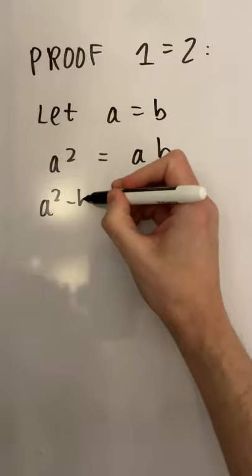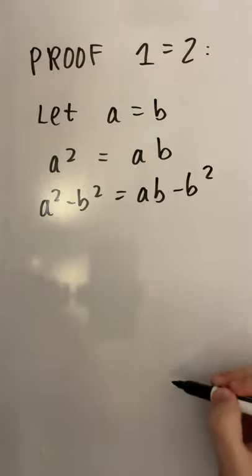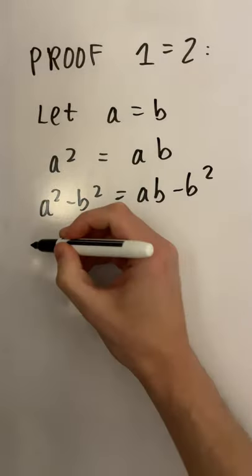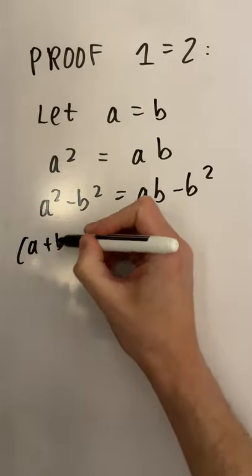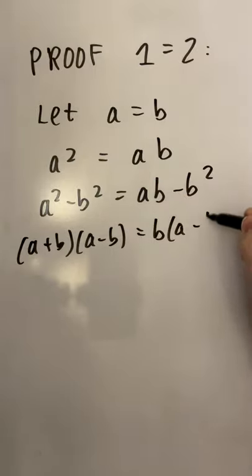Next up I'm going to subtract B squared from both sides, and after doing this we can now factorize both sides by getting the difference of two squares on the left hand side and on the right hand side getting B multiplied by A minus B.